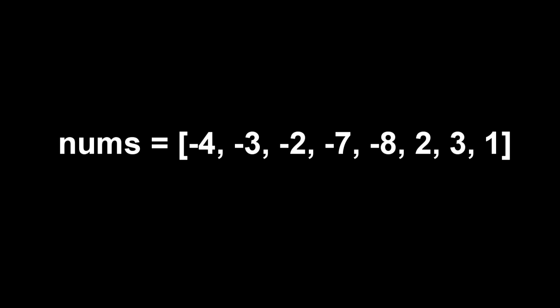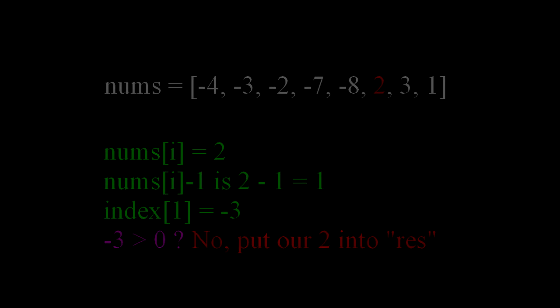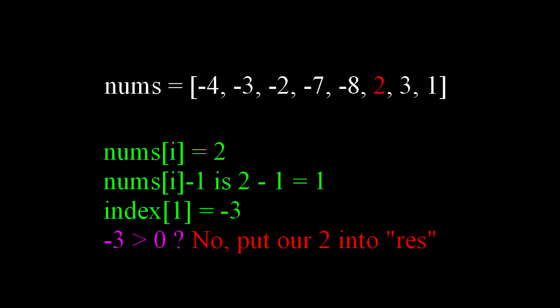When we get to our second 2, we subtract the 1 from it and get index position 1, which is going to now be negative 3. And since this number is not greater than 0, it must be appended into our new list labeled res. I shortened that up. It should be results, but I'm lazy.